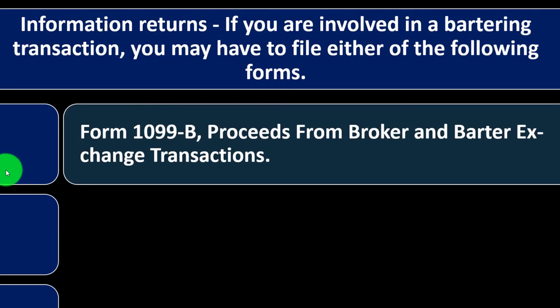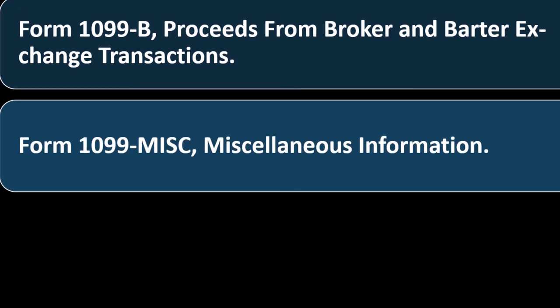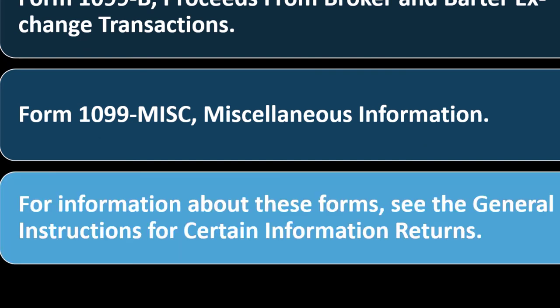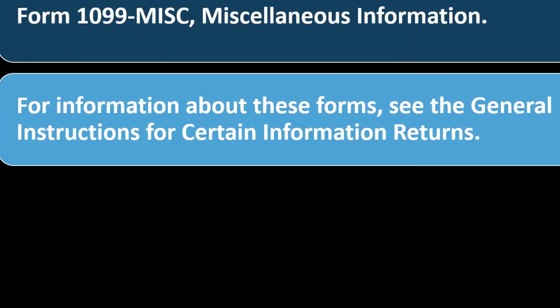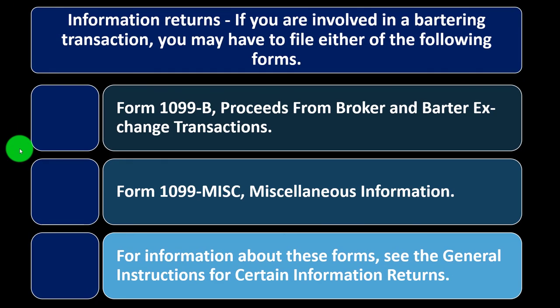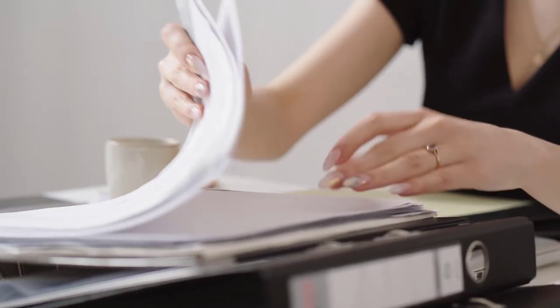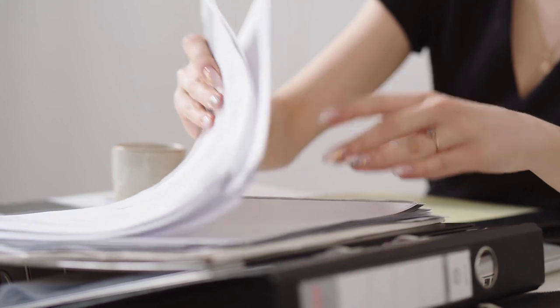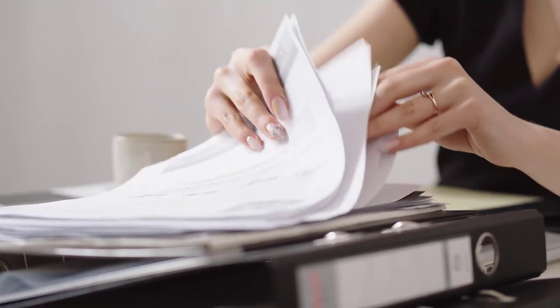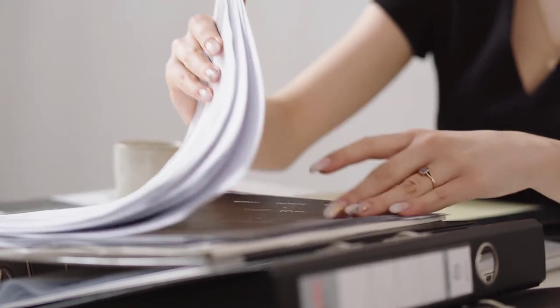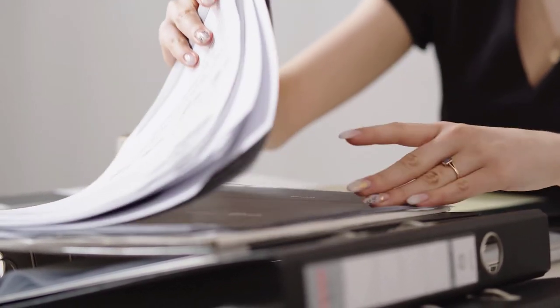Information returns: if you are involved in a bartering transaction, you may have to file either Form 1099-B — Proceeds from Broker and Barter Exchange Transactions — or Form 1099-MISC — Miscellaneous Information. For information about these forms, see the General Instructions for Certain Information Returns. These reporting forms are typically issued to the person receiving the deduction, since the payer is the party the IRS has leverage over, requiring those information returns to be issued.